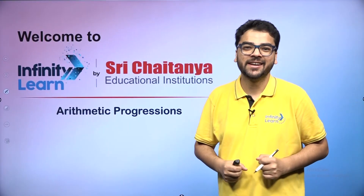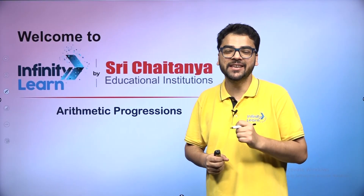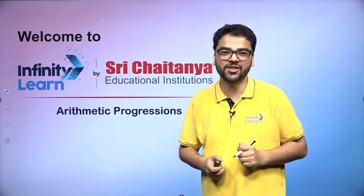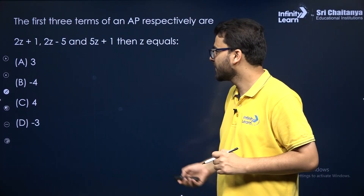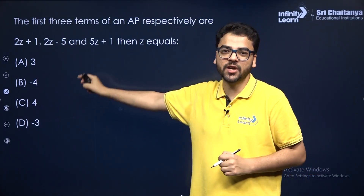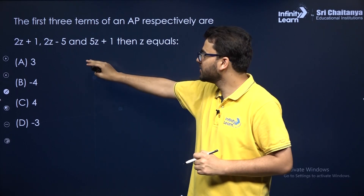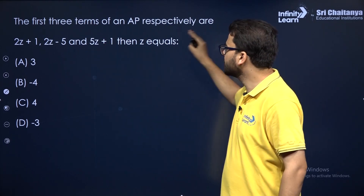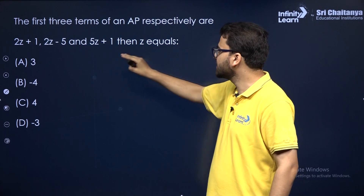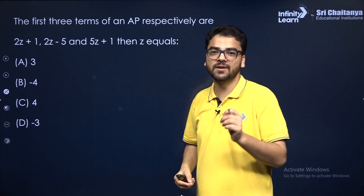Hello everybody. Now let's do some MCQs in the chapter Arithmetic Progressions. So let's start. One of the basic questions which can come in an AP: the first three terms of an AP respectively are given, and you have to find the value of Z.